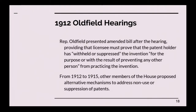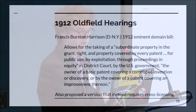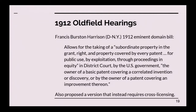After the hearings, Representative Oldfield presented an amended bill providing that the licensee would have to prove that the patent holder had withheld or suppressed the invention for the purpose or with the result of preventing other persons from practicing it. Between 1912 and 1915, other members also proposed compulsory licensing provisions. For example, a 1912 bill by Francis Burton Harrison would have created a subordinate property right in the patent, allowing a taking of that right for anyone who owned a similar patent and was prevented from using it by the original patent, for improvement patents, or for public use. There was also another version that would have required cross-licensing between patent holders.